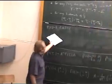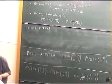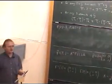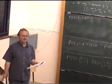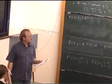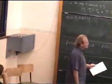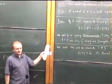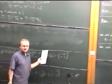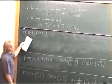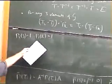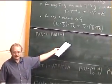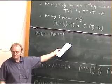Is this a homomorphism or an isomorphism? To be an isomorphism, what must the map be? 1 to 1. Is that 1 to 1? Nope. Both S and E are mapped to 1. So this is a homomorphism, right? Everyone happy with that?